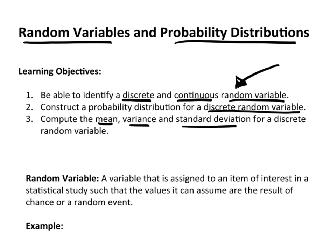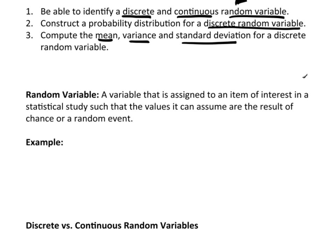Let's start off with the idea of just what is a random variable. By definition, a random variable is a variable that's assigned to an item of interest in a statistical study such that the values it can assume are the result of chance or a random event.